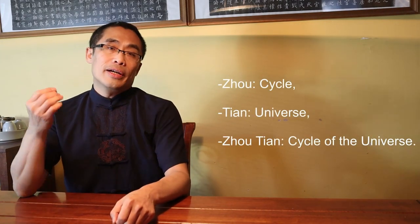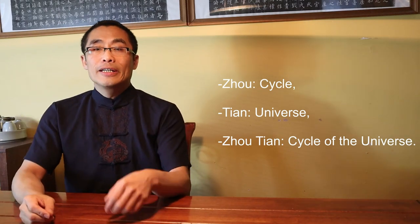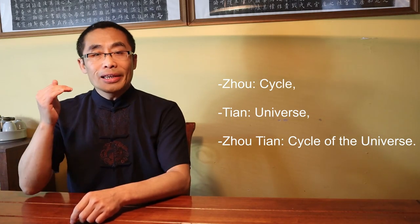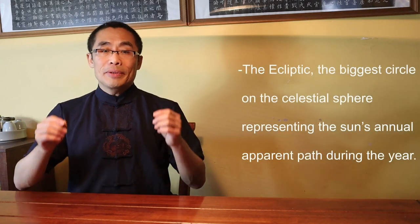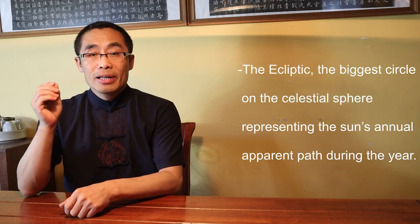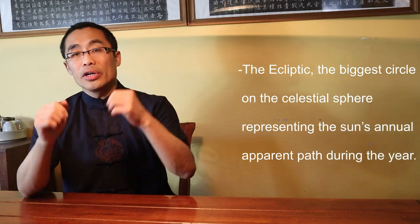Now, let's go back to Zhou Tian, the term itself. Zhou means cycle, and Tian means universe. Together, Zhou Tian means cycle of the universe. In the context of the armillary sphere, Zhou Tian is the metal circle in the equipment representing the movement of the moon and the stars. The ecliptic, the biggest circle on the celestial sphere representing the Sun's annual apparent path during the year. Another important one representing daily motions is part of the equipment as well.